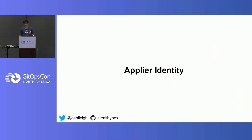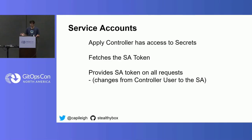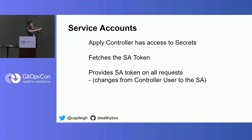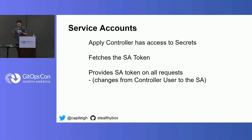So this idea of the applier identity — what do we do about it in Flux? There are a couple of mechanisms for authentication we can use to get this applier identity into the controller for the period of time that it's doing just that one thing. First, we have service accounts. This is really common across all of the projects — regardless of whether you're using Flux, CapController, or Argo CD. For a particular group of resources, whatever app you're applying to the cluster, you can say, when I do this, I want it to use this particular service account.